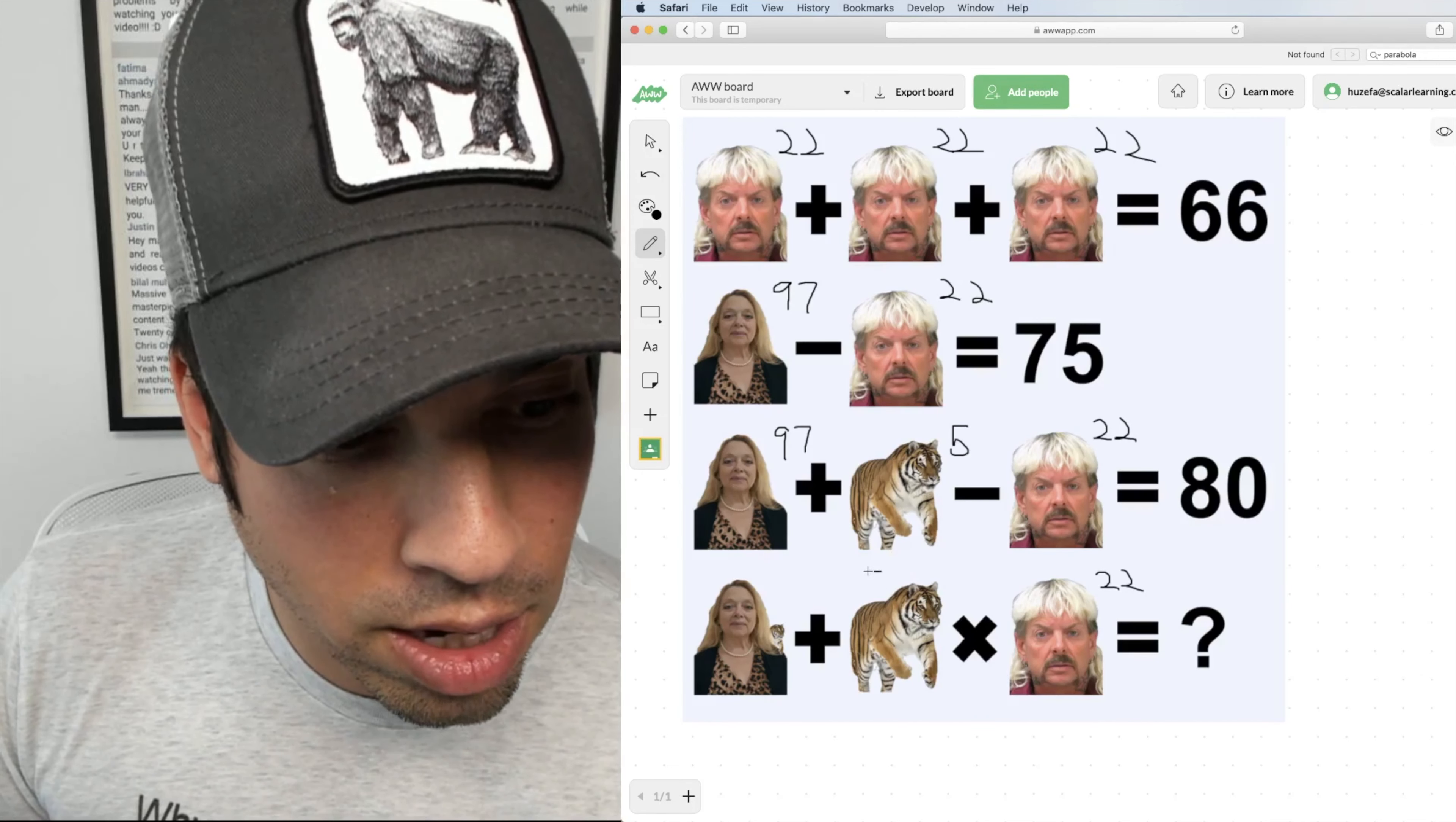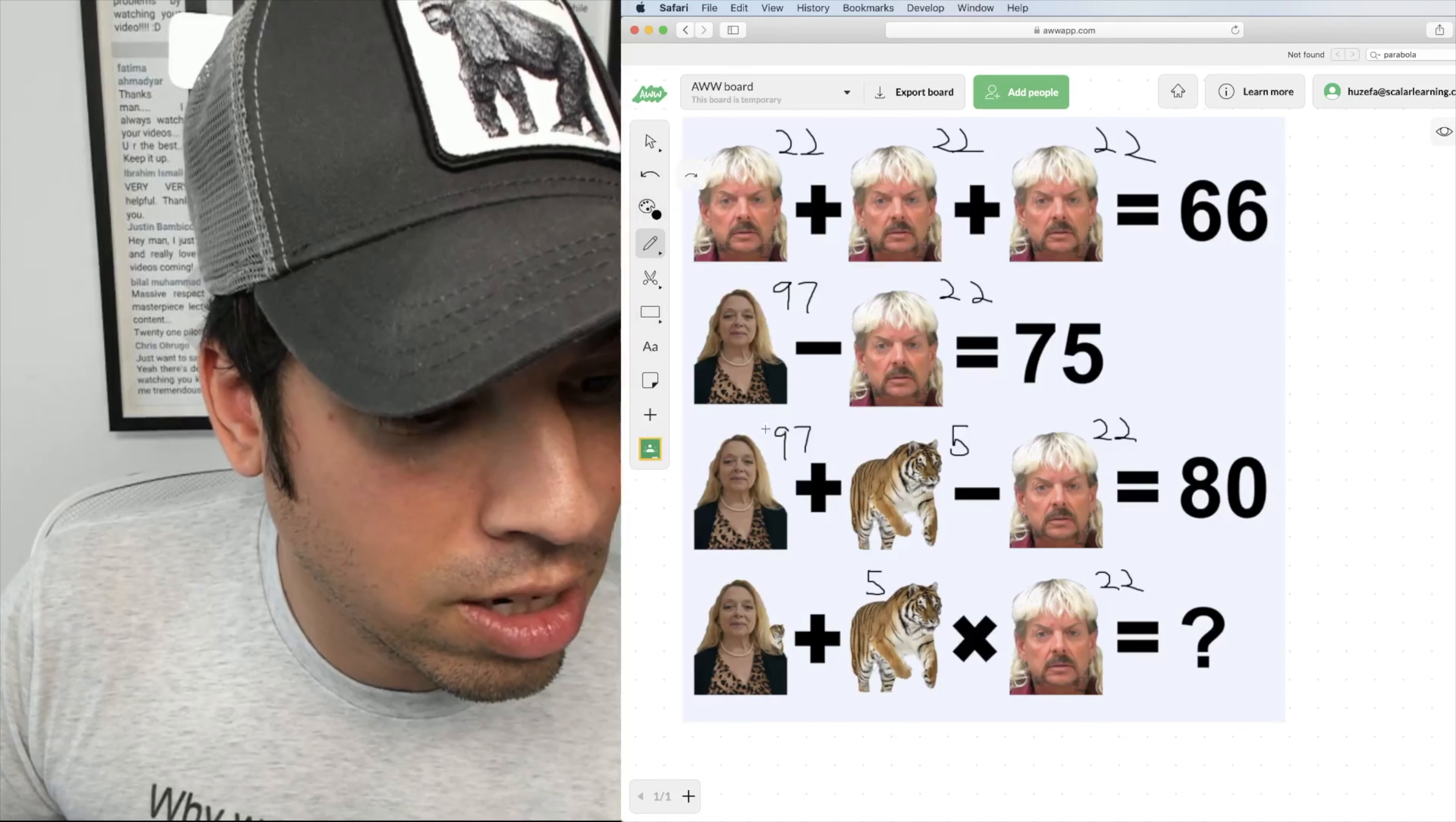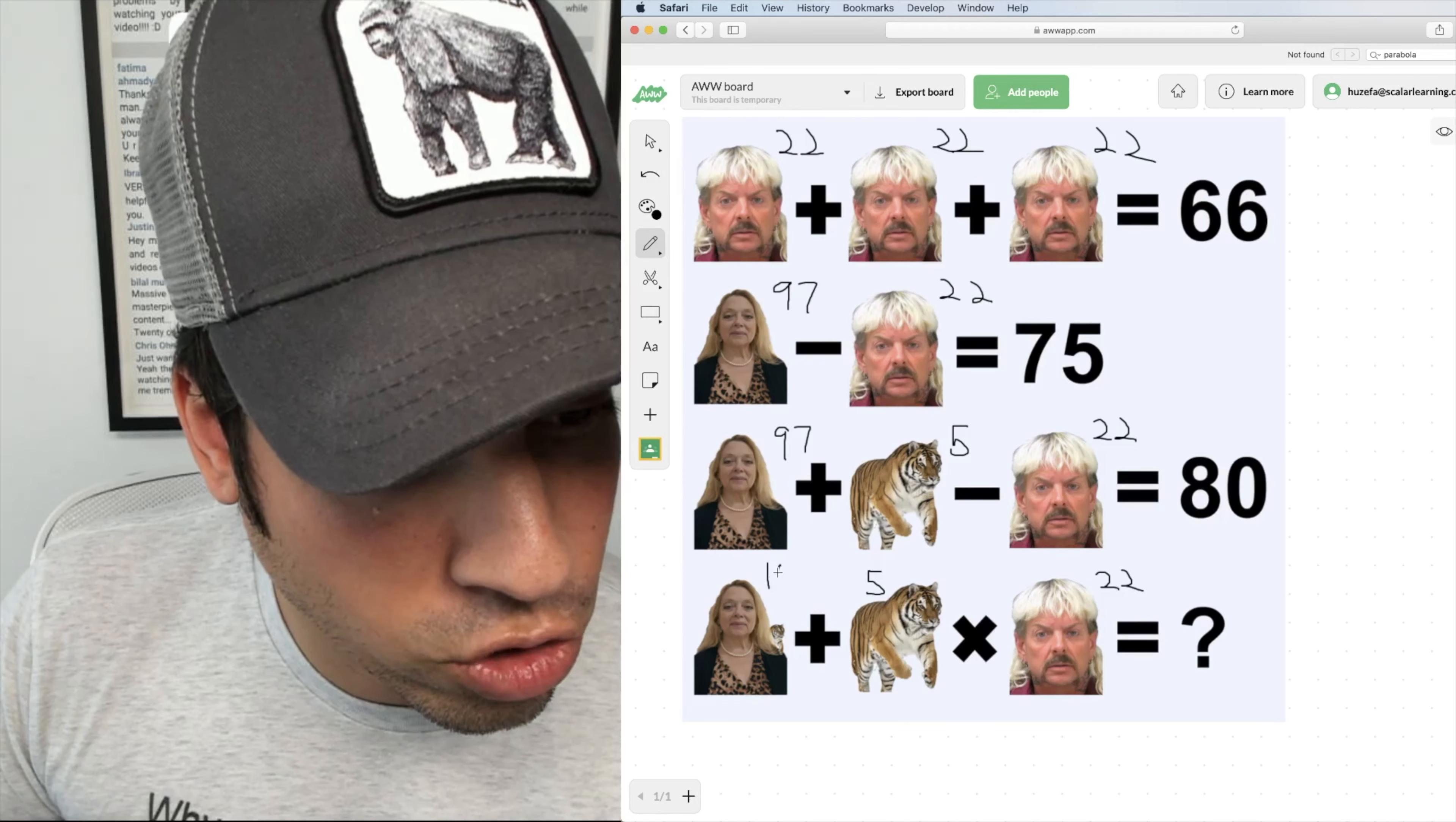We know that the tiger is 5, and we know that, and I hope you guys caught this, there's a little tiger perched on Carol Baskin's shoulder, which means this is not just a value of 97, but it's 97 plus 5, which is 102.